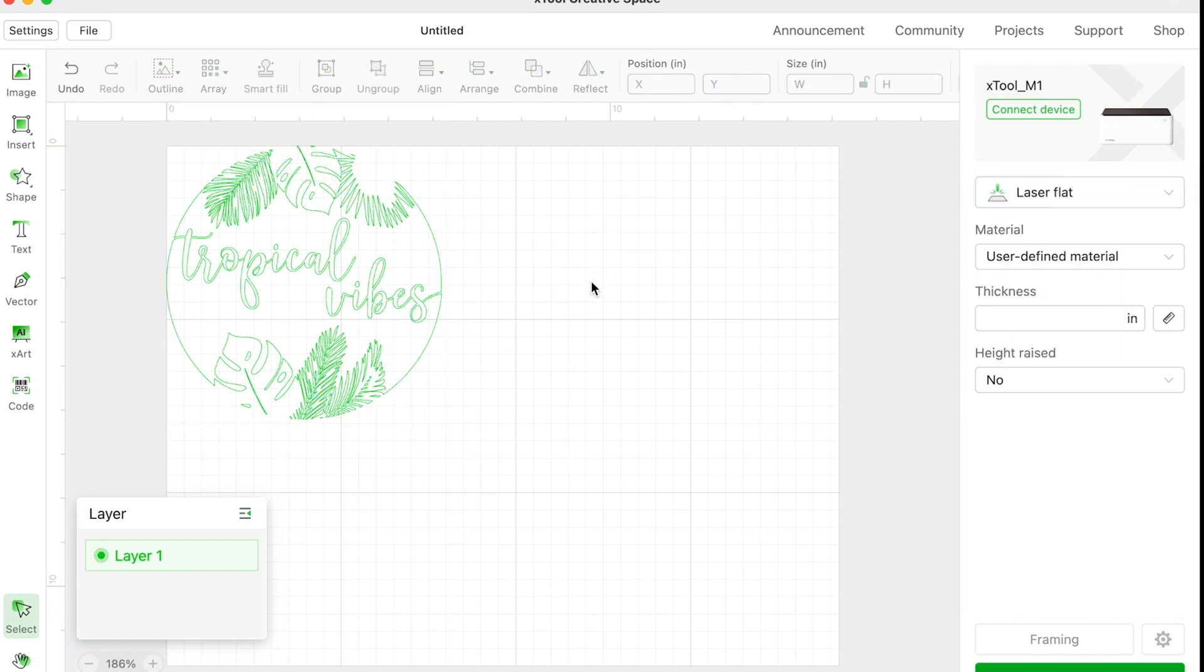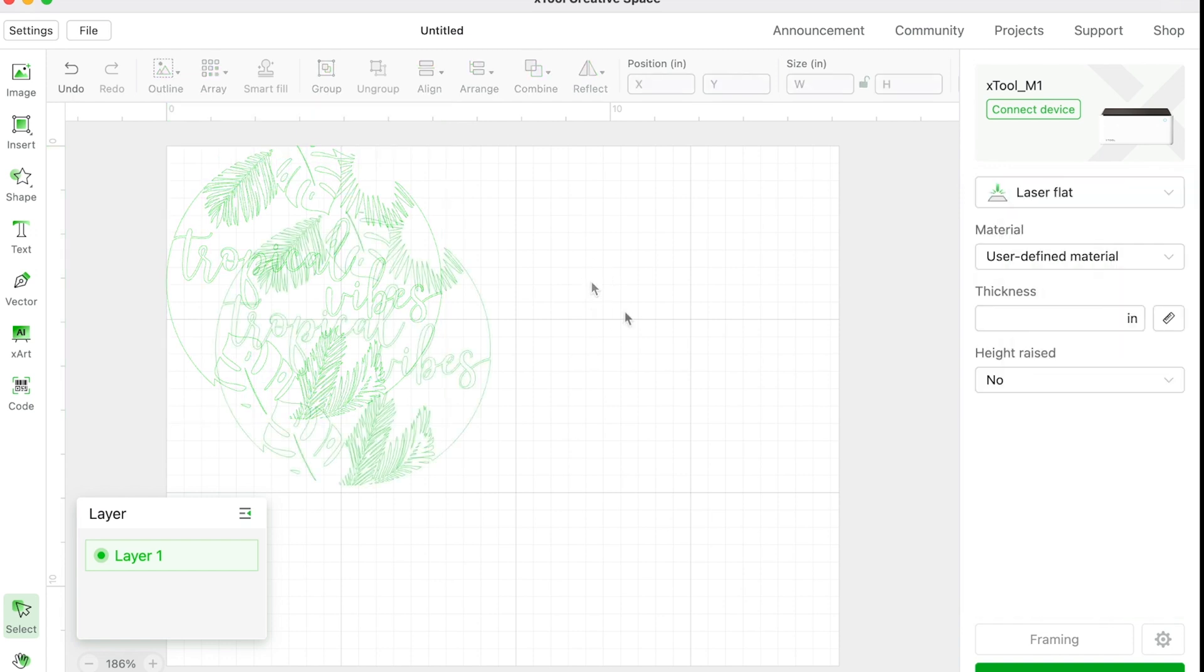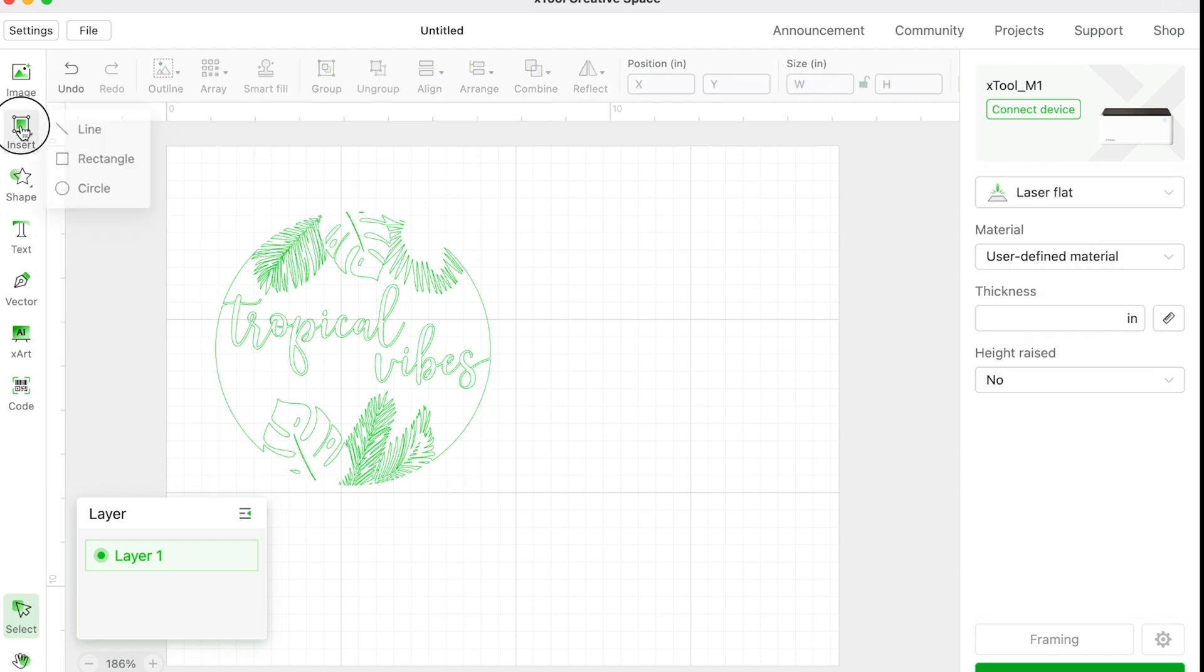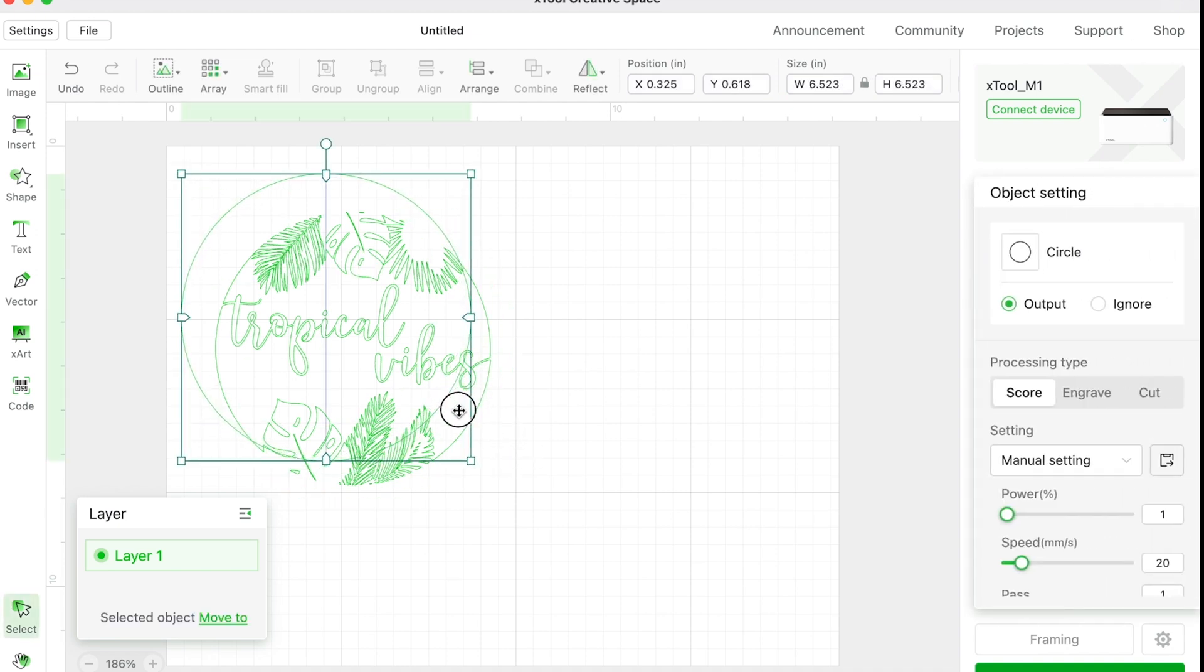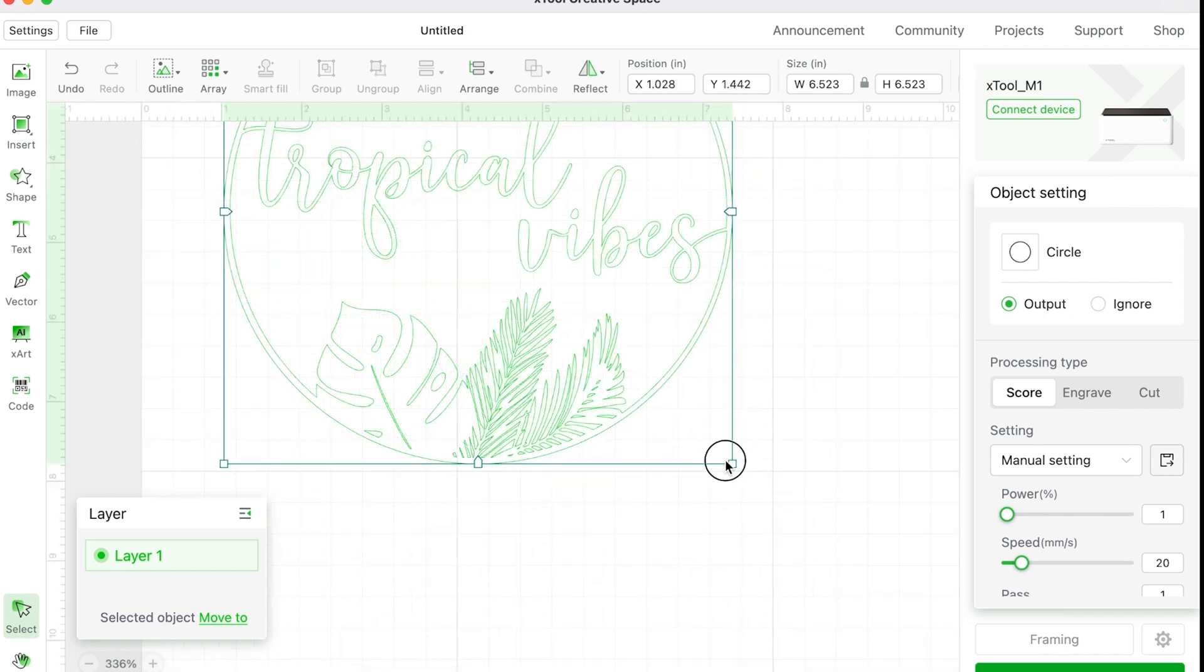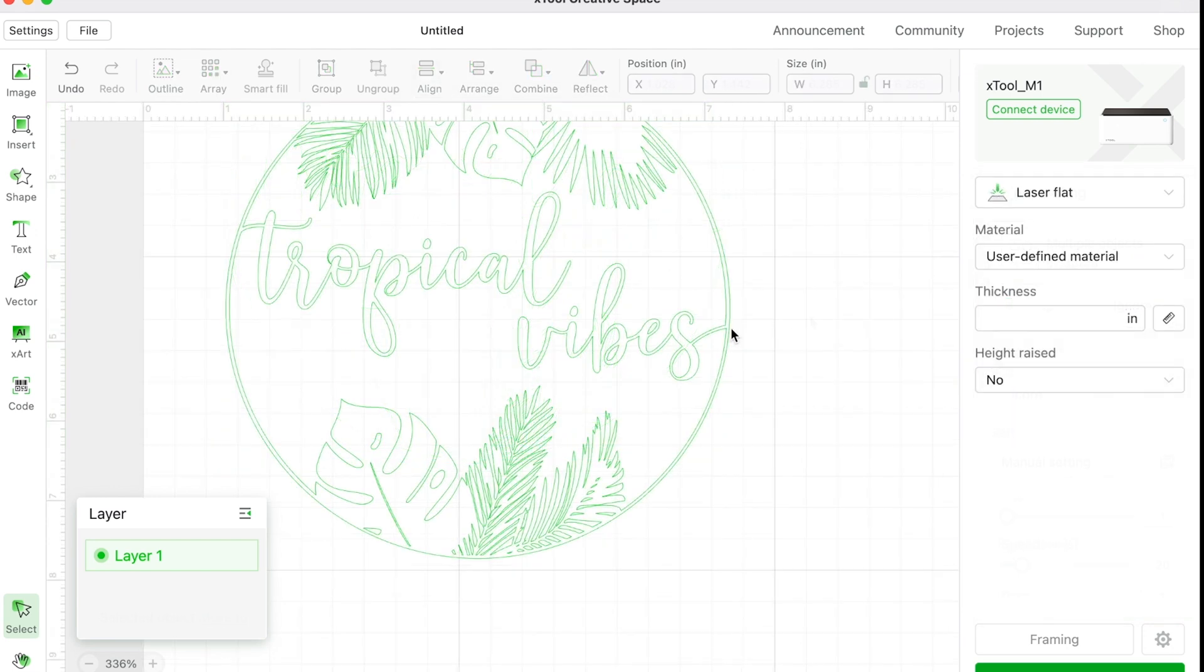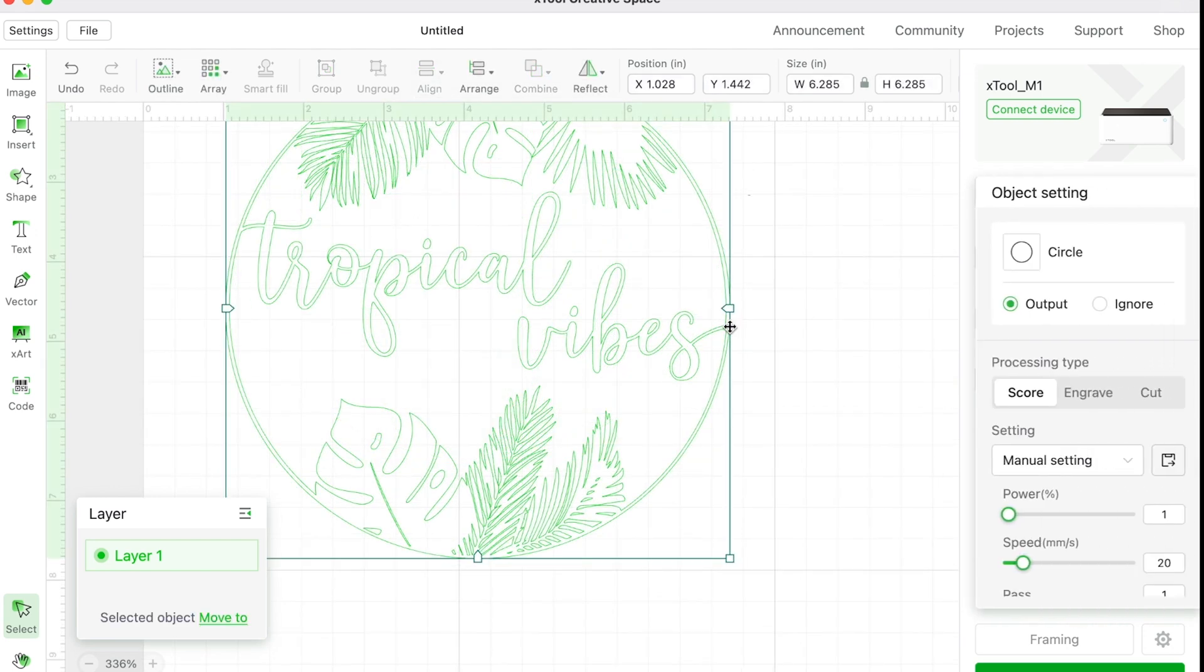Let's talk about what's not frustrating. It's easy to import designs, it's easy to manipulate designs relatively, and it's easy to indicate scores versus cuts. This is a free file on rufflesandrainboots.com. All I'm doing is inputting it and telling it to score. I'm adding an additional circle around the outside edge and telling it to cut it.